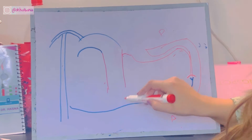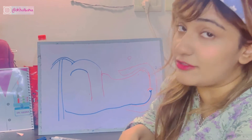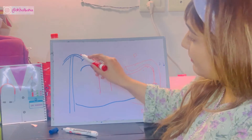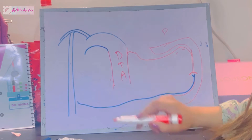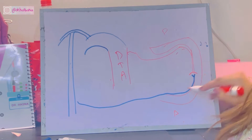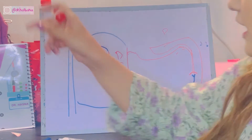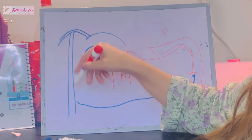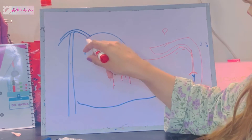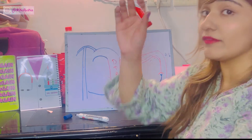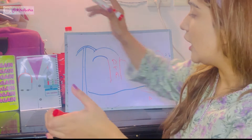In the same intercostal space, a posterior intercostal artery comes from the descending thoracic aorta, and an anterior intercostal artery comes from the other side. The posterior intercostal artery is a branch of the descending thoracic aorta, while the anterior intercostal artery is a branch of the subclavian artery. The subclavian artery gives the internal thoracic artery, which gives the anterior intercostal artery. Importantly, the arch of the aorta gives rise to the subclavian artery.